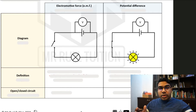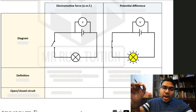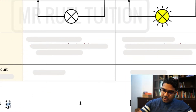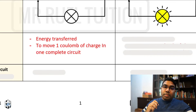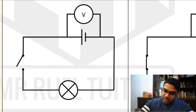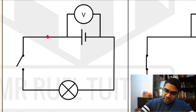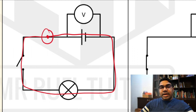EMF and potential difference are both a type of voltage — that means they are energy per unit charge. The difference is where the charge moves from and to. Electromotive force is the energy transferred to move one coulomb of charge in one complete circuit. So if I started at this point, the EMF would be the energy required in joules to transfer one coulomb of charge from here, all the way around the circuit, back to exactly this point. This is the EMF, the electromotive force.